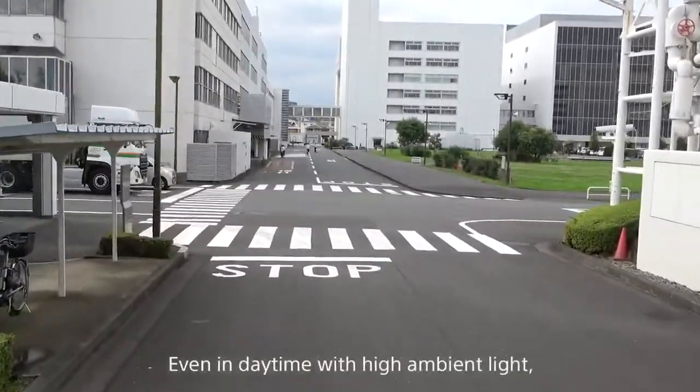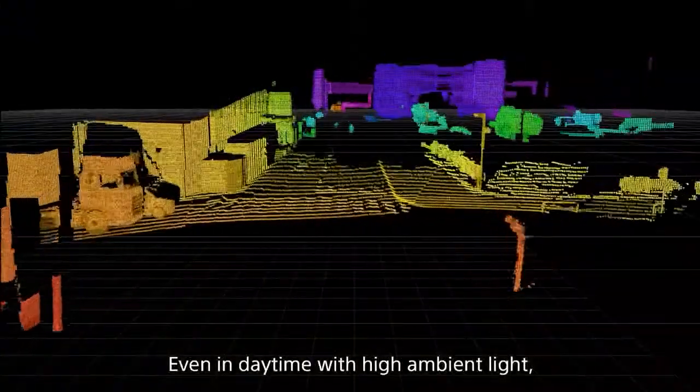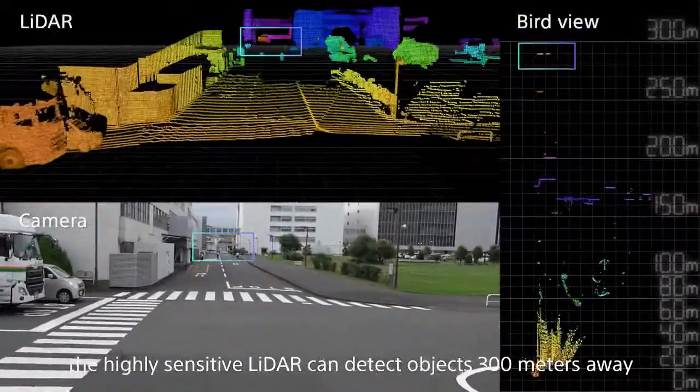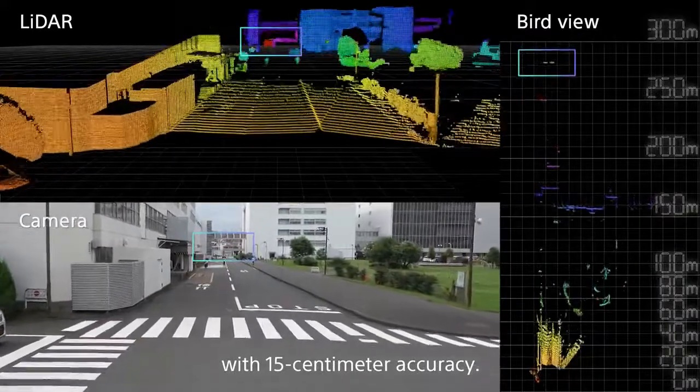Even in daytime with high ambient light, the highly sensitive LiDAR can detect objects 300 meters away with 15 centimeter accuracy.